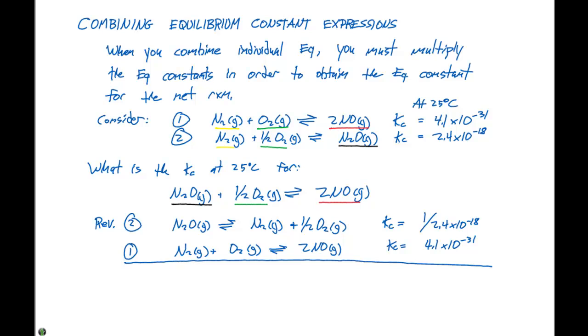The nitrogens are going to cancel out. We have N2O gas over here on the left hand side. We also have an O2 gas, but we have a half of one over here, so this is going to cancel with that and we're going to have a half left over here. We have N2O plus a half O2 in equilibrium with 2 NO gas.